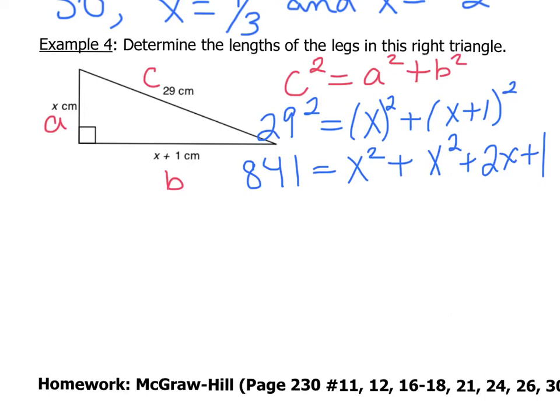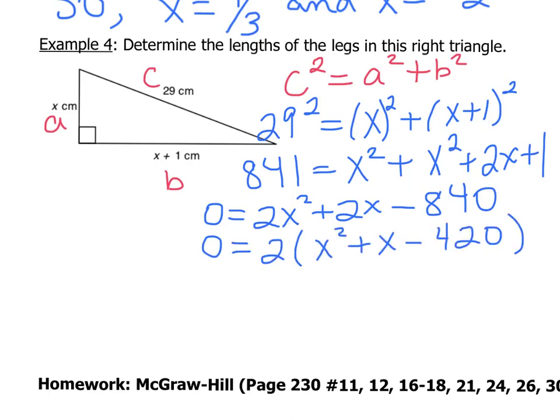All right, so now the next thing to do is to simplify and move everything over to one side of the equal sign. And so then we have an equation equal to zero. Which our result should be 0 equals 2x squared plus 2x minus 840. Now if you notice, there is a common factor of 2 throughout. So factor the 2 out first, and then factor the remaining expression right here.